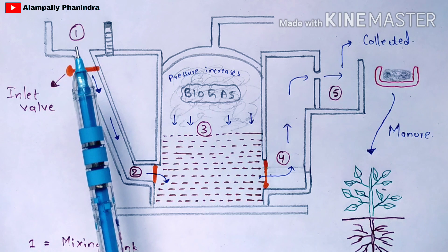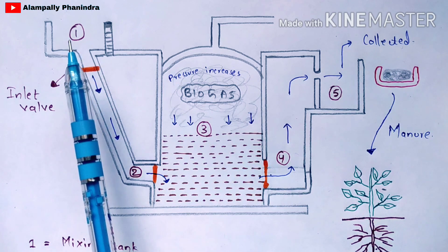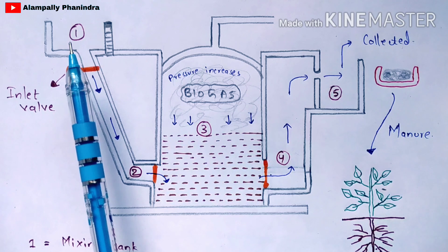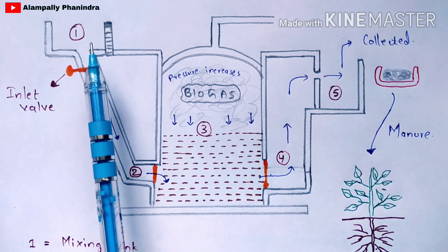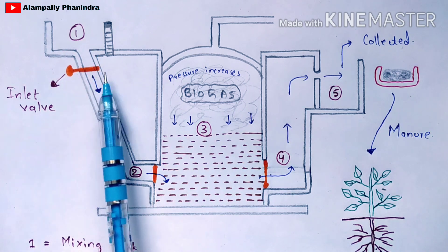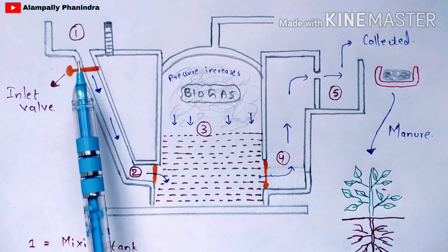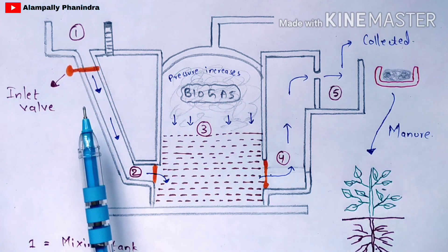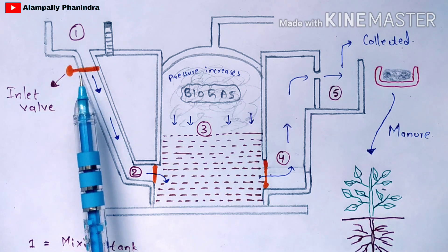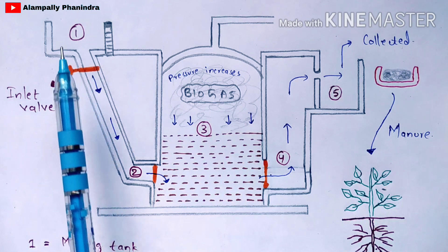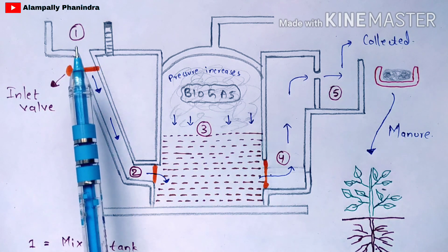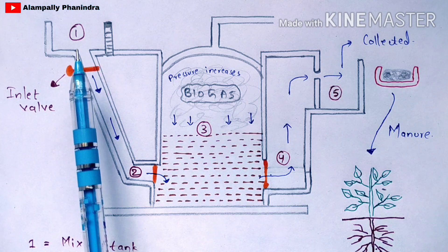The cow dung is mixed with water to form a slurry, which is placed in the mixing tank. During the addition of the slurry to the mixing tank, make sure to close the inlet valve to prevent the dung from passing into the inlet chamber prematurely. Close the inlet valve and add the total slurry into the mixing tank.